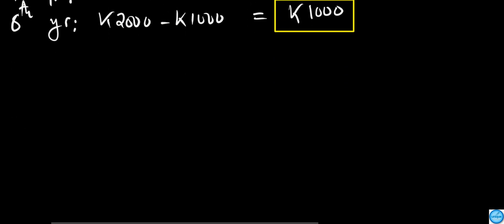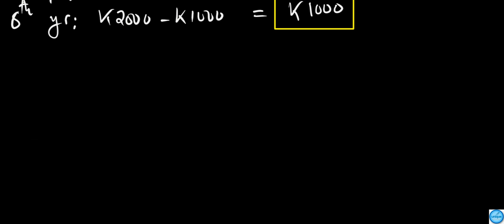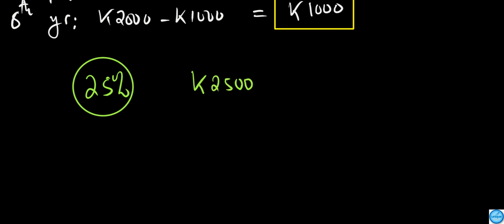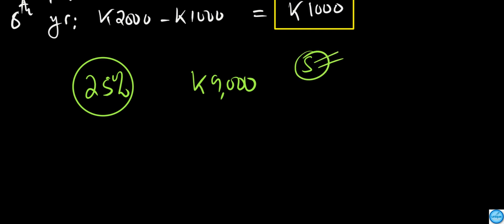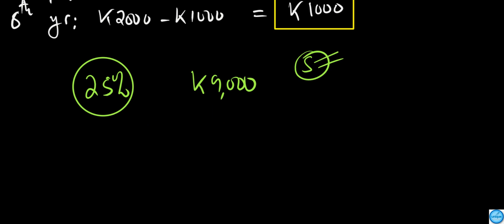In the reducing balance method, this time we're going to use the percentage given. We have a depreciation percentage of 25% according to the question. The cost of our item is 9,000, and this is the book value we start with. In the reducing balance method, this book value is our starting point for each year.